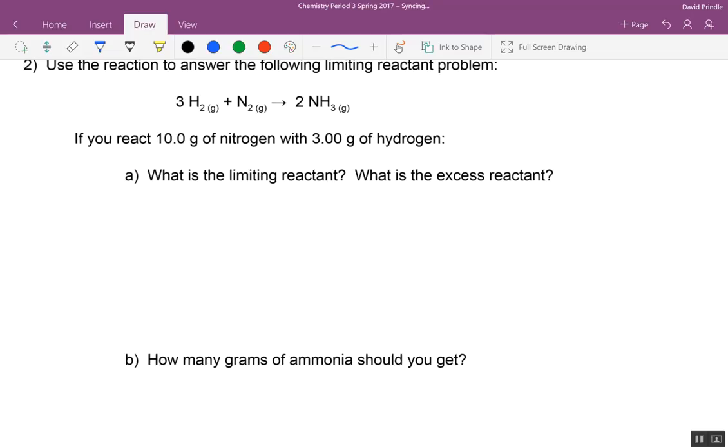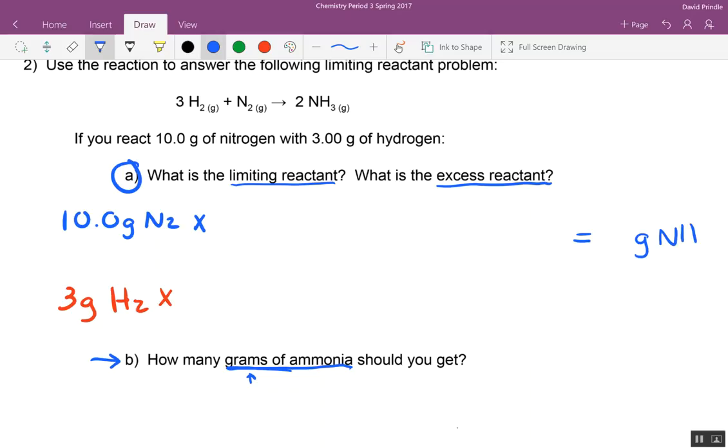Now look here. We got what's the limiting reactant, what's the excess reactant. Then I look in problem two, how many grams of ammonia should you get? So when you do the math up here in A, you are going to get the answer for B. Because down here they want grams of ammonia, so let's do it up here and make it one big problem. So we're starting with 10 grams of nitrogen. Remember it's N2, and we're starting with three grams of hydrogen. I'm going to hit pause. Remember you're looking for grams of ammonia in both cases.